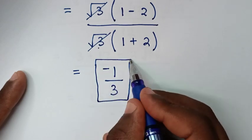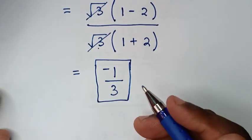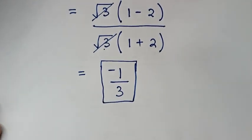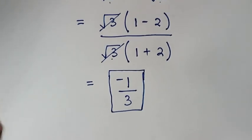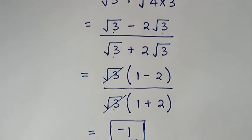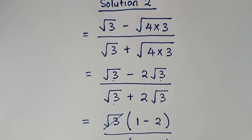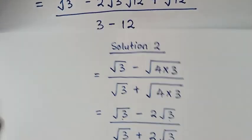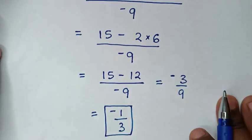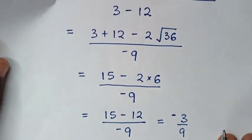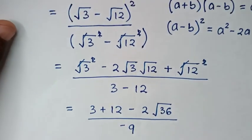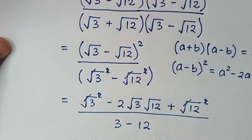Negative 1 over 3 is our final answer, same as in the first method. Thank you for watching — don't forget to subscribe to my channel, and see you in the next video. Bye bye!